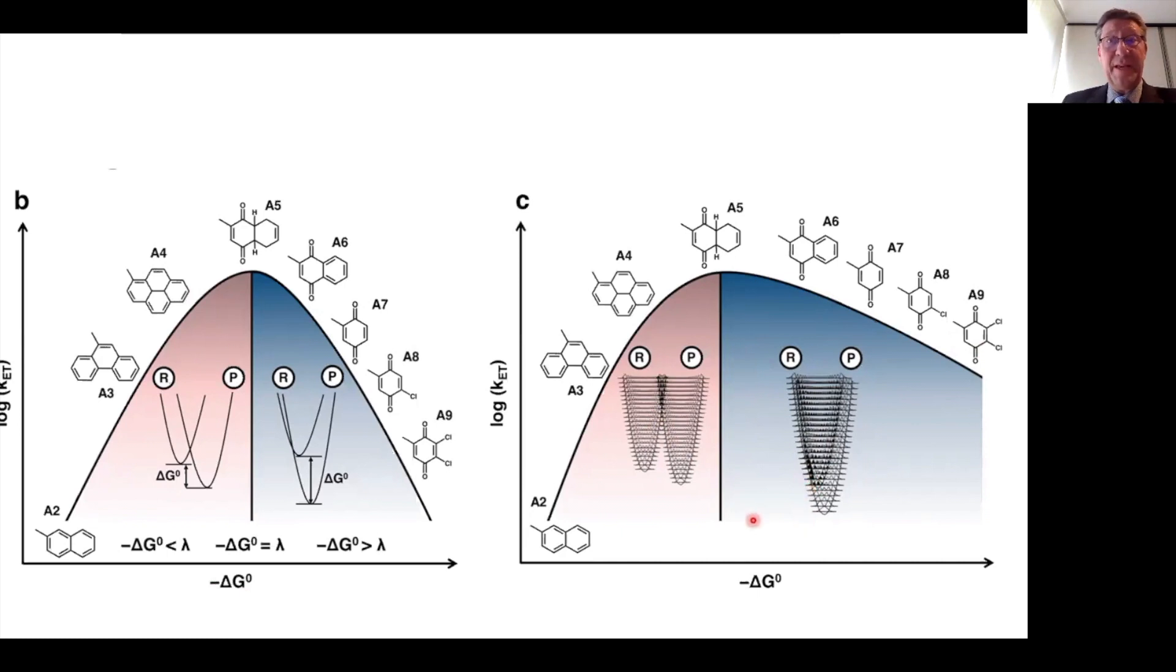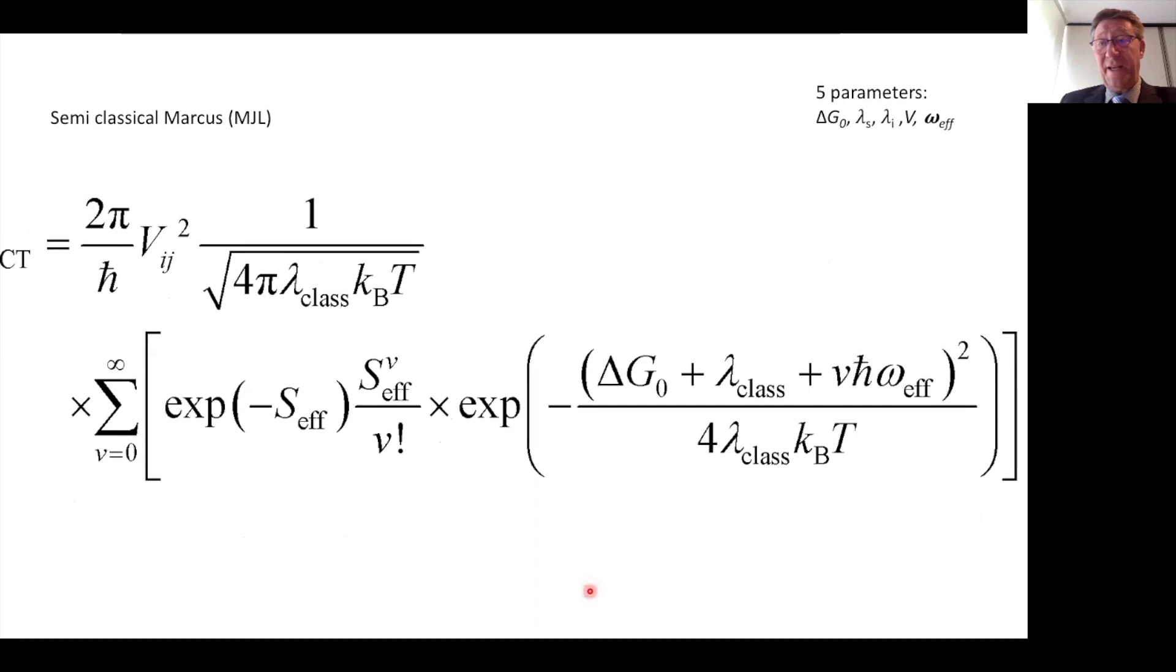We can encounter the semi-classical Marcus equation in various ways. It contains five parameters: the delta G, the solvent reorganization, internal reorganization, electronic coupling, and this particular vibration. A vibration that is related to the vibronic coupling.